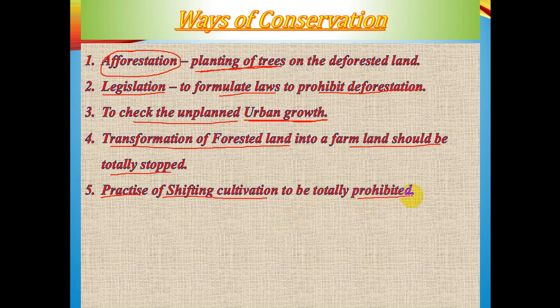The fifth way is to control shifting cultivation — also known as slash and burn cultivation — practiced by tribal societies in forested areas. The government should provide incentives to tribal communities to stop shifting cultivation, and if it is prohibited, forests can be conserved.